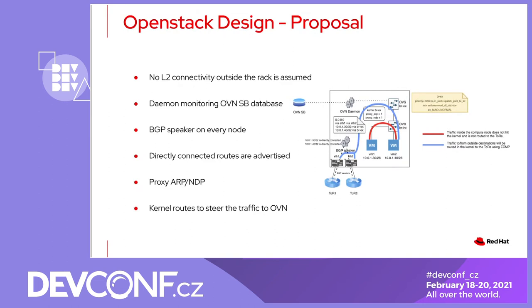We are assuming absolutely no Layer 2 connectivity outside the rack. In the first approach, we are aiming to have two NICs using ECMP routes to the top-of-rack switches, and those networks would be /31 — basically point-to-point networks to the top-of-rack — just for the BGP sessions and to steer all the traffic to that network. The goal is to advertise those VMs that are going to be booted on the hypervisor. We monitor that through this daemon in a directly connected fashion, and then we need to steer the traffic to the kernel in order to do this routing. The routing to the actual top-of-rack switches will happen at the kernel level.